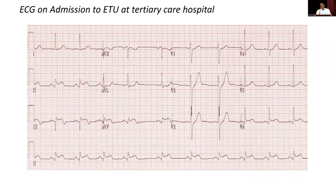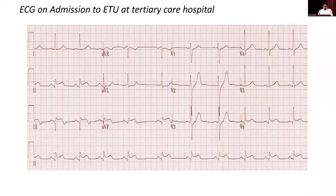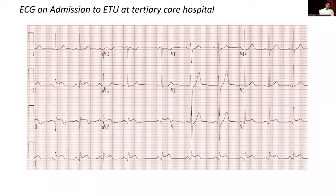The ECG at the TTU showed persistence of ST elevation in inferior leads with no even partial resolution after thrombolysis, and no features of arrhythmias. Because we thought of arrhythmias for the persistent hypotension but found none, the patient was directly taken to the cath lab — the usual practice when there are features of acute ST elevation MI without delay.